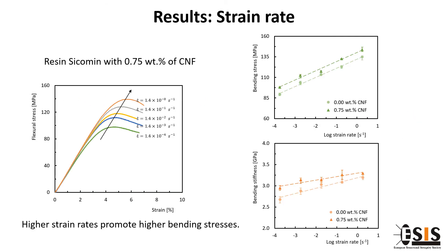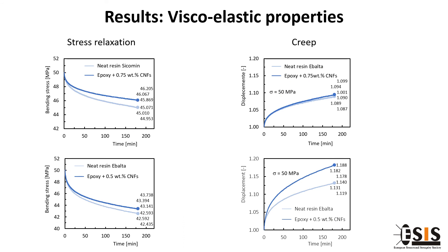Five different speeds were also studied. The graph on the left shows representative curves for the five study speeds of the nanoresin reinforced with 0.75% by weight of carbon nanofibers. In the graphs on the right, it is represented the comparison between the neat resin and the nanoresin added with 0.75% by weight of carbon nanofibers for all speeds. With carbon nanofibers, a stress of 15 MPa was reached at the respective displacement.